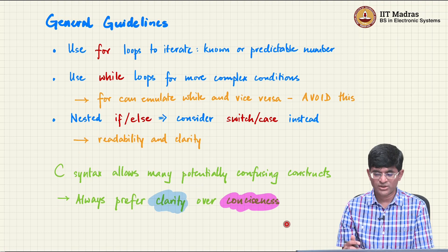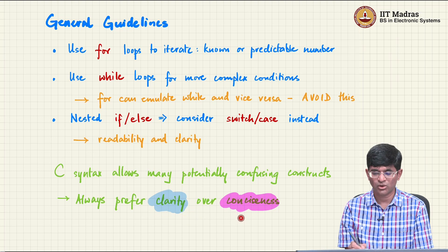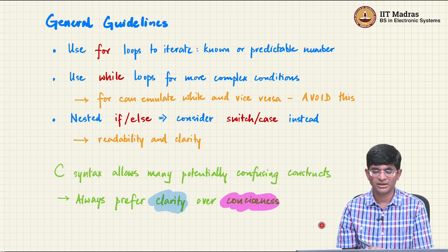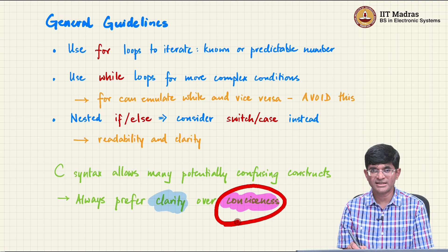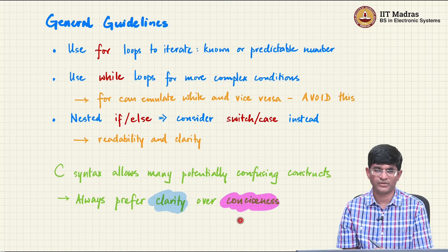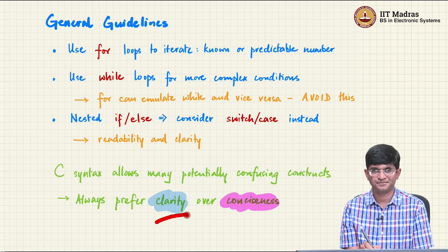One thing to emphasize is that C syntax allows many potentially confusing constructs. In general, it is always preferable to go for clarity over conciseness. You may recall the International Obfuscated C Code Contest, which goes primarily for conciseness and uses all kinds of tricks in C syntax to make things intentionally difficult to understand. When writing normal code, it is always preferable to prefer clarity.